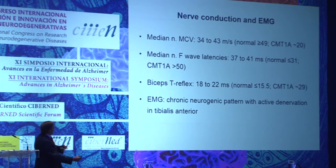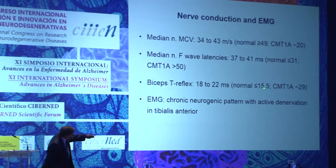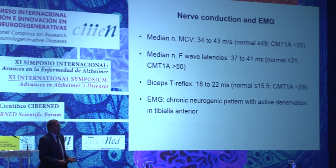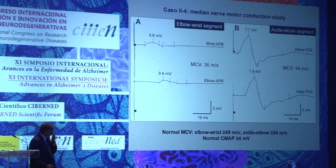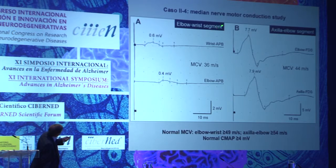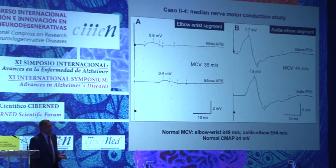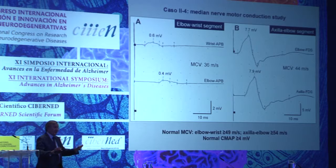We recorded the biceps brachii reflex with values ranging between 18–22 milliseconds — normal lower than 55, in CMT1A 29 — again intermediate between normality and CMT1A. Electromyography showed chronic denervation with sparse spontaneous denervation in tibialis anterior. In the recording of the median nerve, stimulating at wrist and elbow, we obtained a monophasic potential with severe reduction: in normal conditions greater than 4 millivolts, here it was 0.6 and 0.4 millivolts — indicating loss of large myelinated fibers — with motor conduction velocity of 36 meters per second.